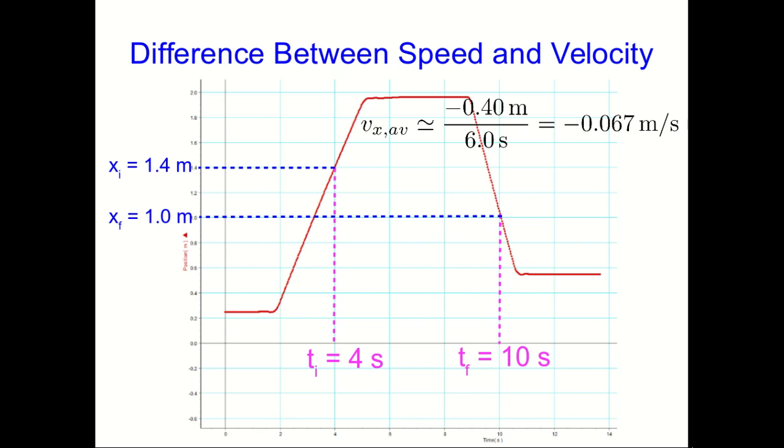Now, does that mean the average speed over this same time interval is just 0.067 meters per second? Well, no, it doesn't. Remember, to calculate speed, you need to take the distance traveled over the time taken. The distance traveled isn't 0.4 meters, because the cart went out to this point where it stopped and then turned around. So it went about 0.55 meters to the right, stopped, and then went about 0.95 meters back to the left. The total distance traveled is 0.55 plus 0.95 meters, and that gives us a totally different average speed.